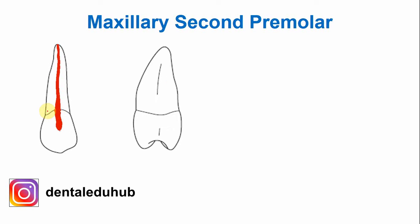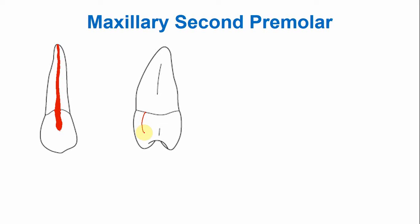This is the buccal-lingual outline of the maxillary second premolar. The two well-developed pulp horns are visible. The buccal pulp horn is slightly more developed as compared to the lingual pulp horn. The pulp chamber and the canal are very broad buccolingually — quite broad buccolingually as compared to the mesiodistal dimensions.